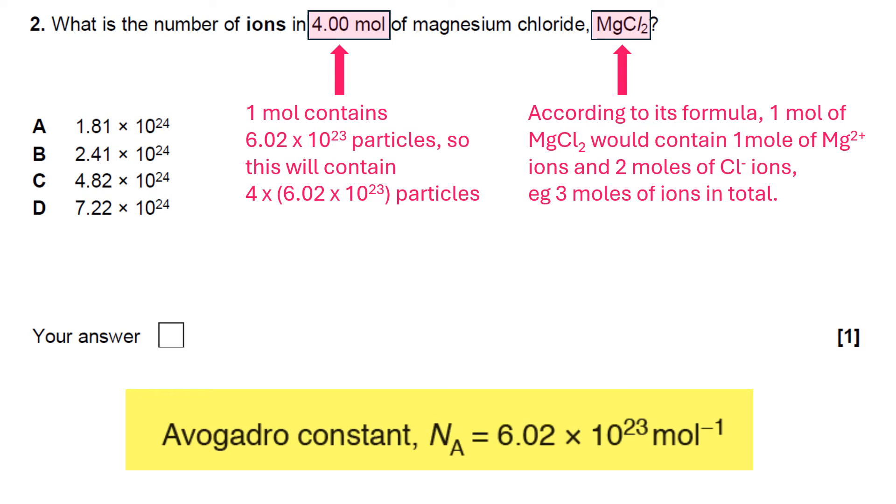If we're talking about magnesium chloride, magnesium chloride doesn't exist as particles of magnesium chloride. It exists as magnesium ions and chloride ions. Looking at its formula you can see one mole of magnesium chloride would contain one mole of Mg2+ ions and two moles of Cl- ions. So there's three moles of ions in total.